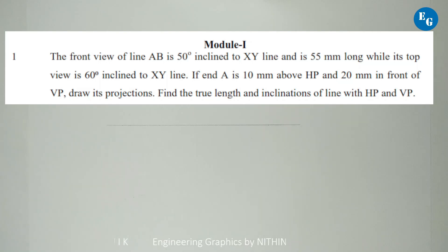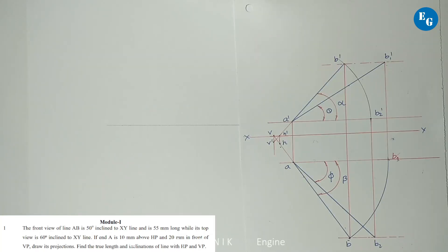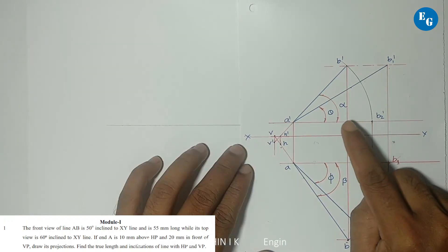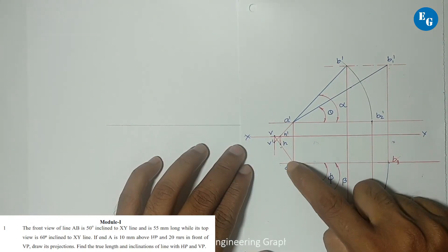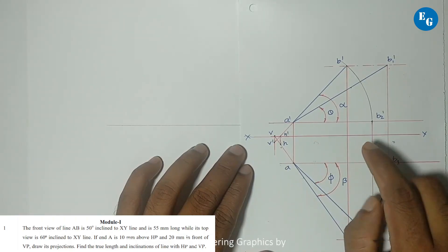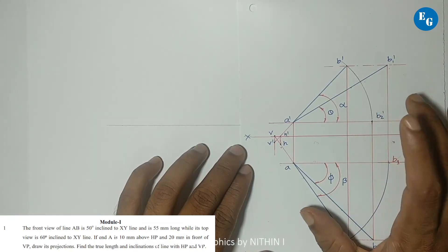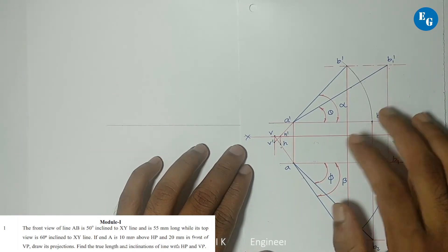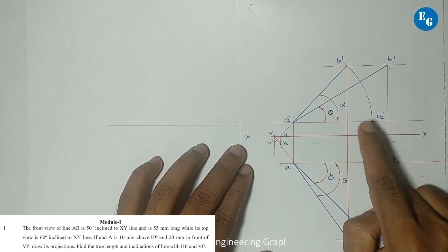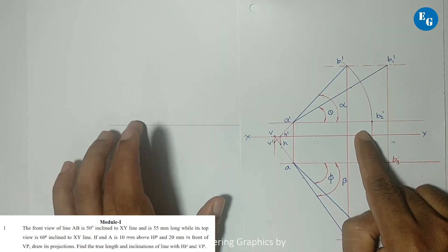The problem of the rotating line method is related to finding: inclination with HP, inclination with VP, true length, and one point position. The rotating line method is used to find that line in the projection. We can do all of these problems using this method.